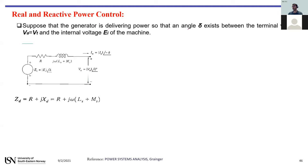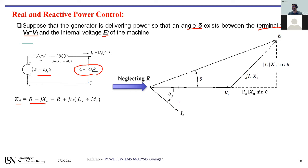In the generator equivalent circuit, there is angle delta — the phase angle difference between the terminal voltage Vt and the internal voltage Ei. Delta is a very important parameter. The synchronous impedance is r + jXd, the synchronous reactance. If we consider resistance as zero, we have terminal voltage plus the voltage drop on the synchronous reactance Xd.